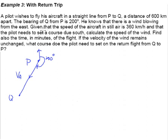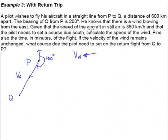He knows that there is a wind blowing from east — north, south, east, west. From east, therefore we know our information on VW. VW goes this way, from east means towards west. Given that the speed of the aircraft in still air is 360 km per hour — the velocity of the aircraft relative to the wind — this one is going to be 360 km per hour. And that the pilot needs to set a course due south.